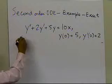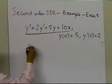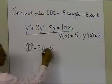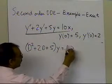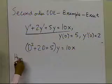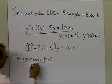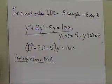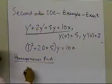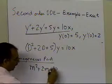We're going to write down this particular differential equation in operator form. We get (D² + 2D + 5) operating on y is equal to 10 times x. So the homogeneous part of the solution will be based on what we get in the operator form. The characteristic equation for the homogeneous part is m² + 2m + 5 = 0.